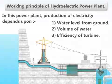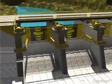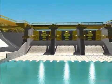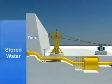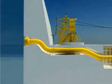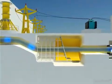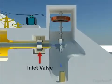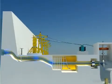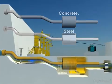A hydroelectric power plant requires a water reservoir, so these plants are constructed near big dams. Water stored in dams has potential energy. The water under pressure is carried by a penstock and supplied to the turbine through the inlet valve. The penstock is a pipe made up of steel or concrete.